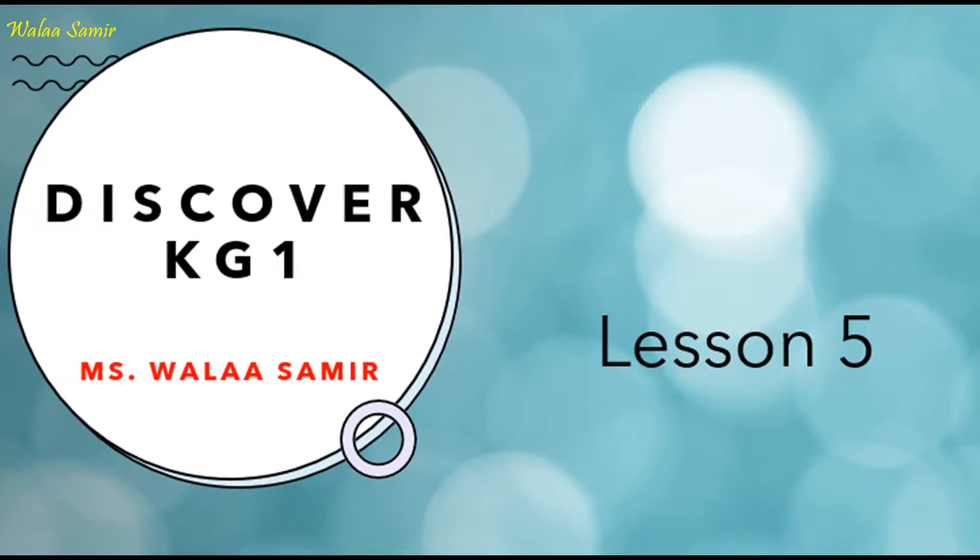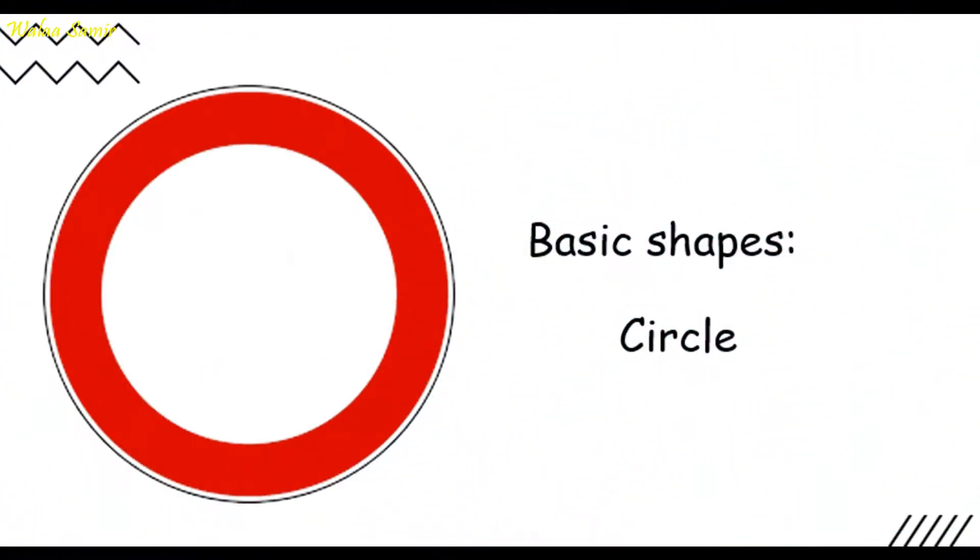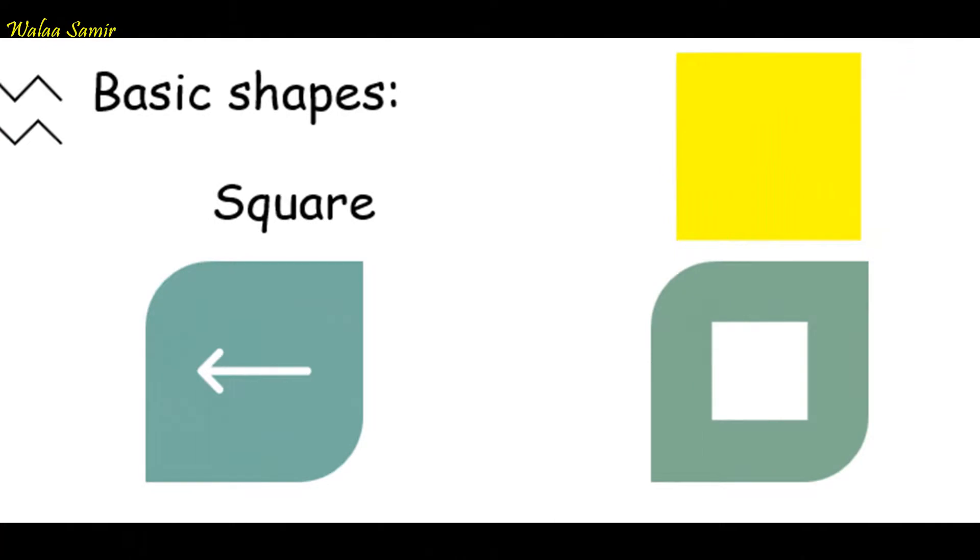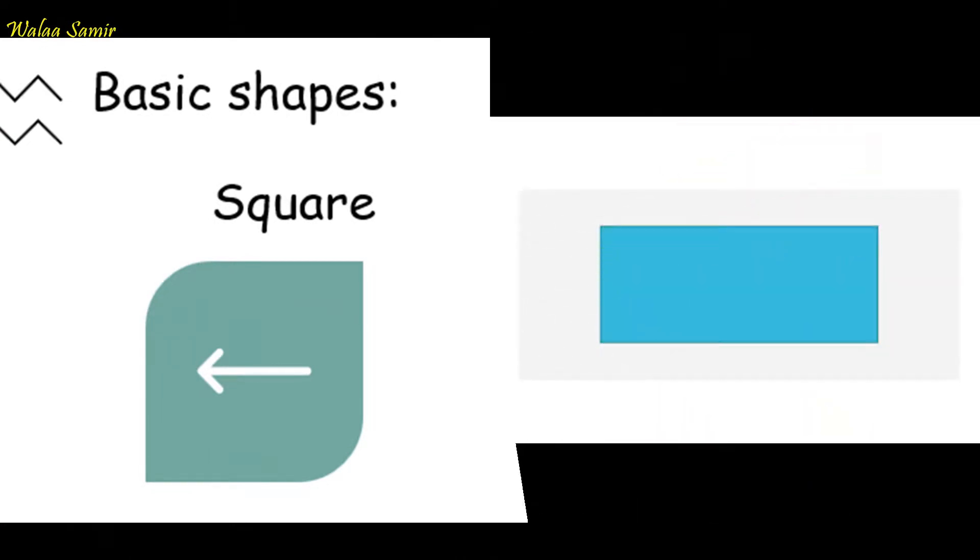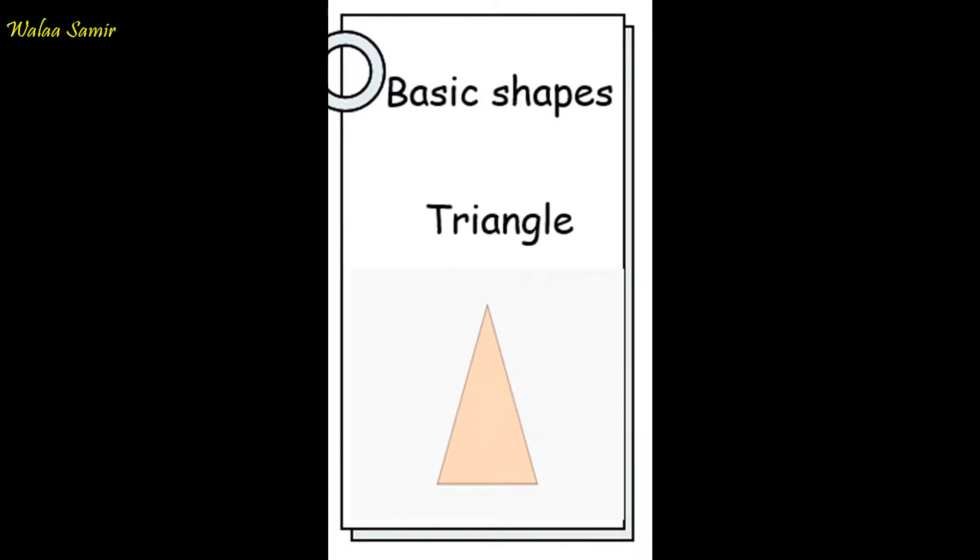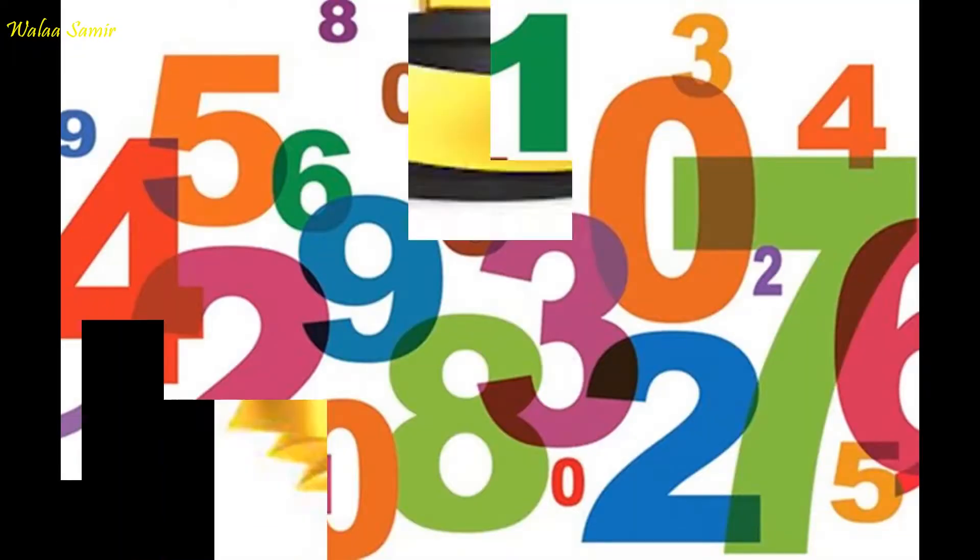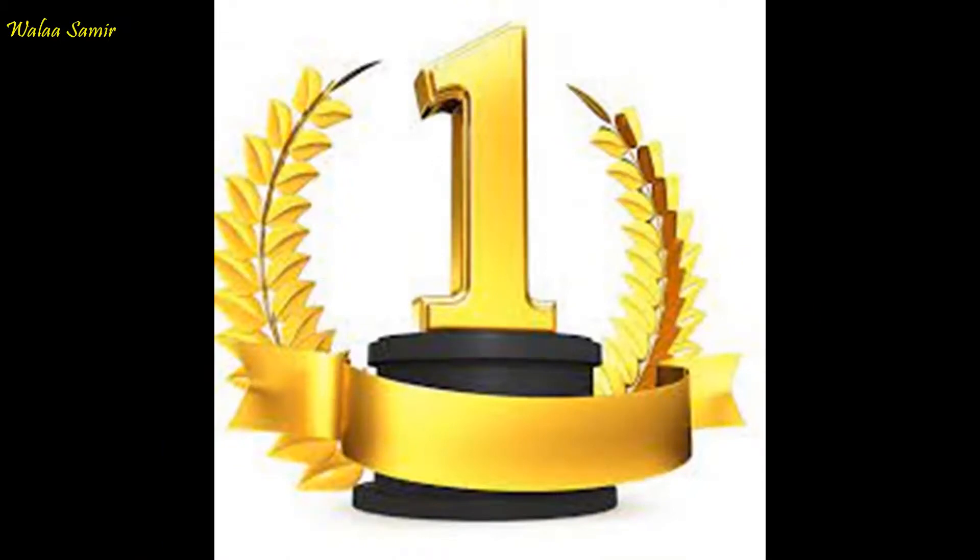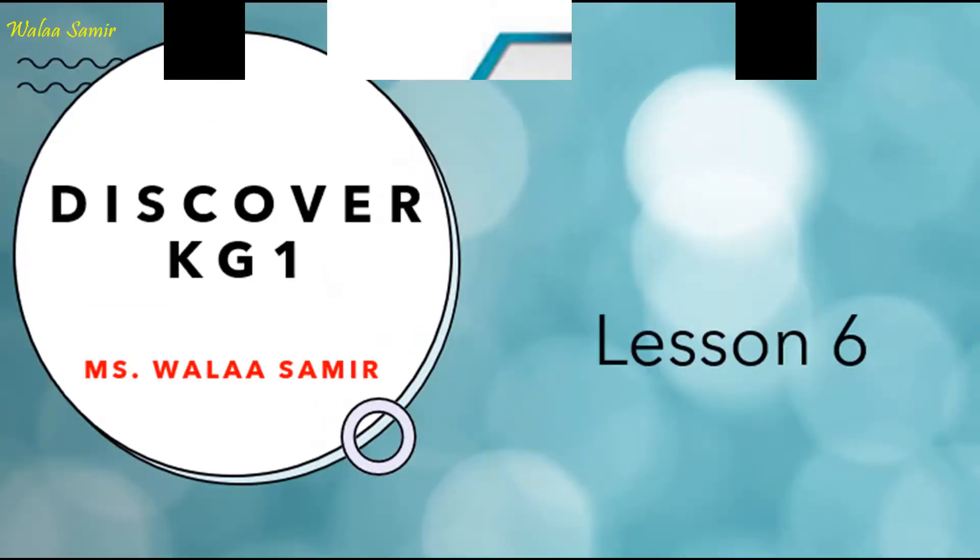Time for Lesson 5 words. In this lesson, the main focus here is on the basic shapes. The first shape is circle. Square. Rectangle. Triangle. And we have the numbers: 1, 2, 3, 4, 5.